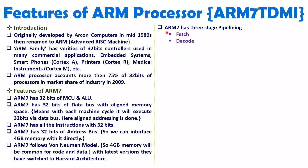ARM7 follows a three-stage pipeline, which makes execution faster compared to non-pipelined processors. When the first instruction is being fetched, the next is in queue. When the first instruction is being decoded, the second gets fetched. When the first instruction is being executed, the second is decoded and the third is fetched. Because of this parallel pipelining, execution speed of ARM increases.